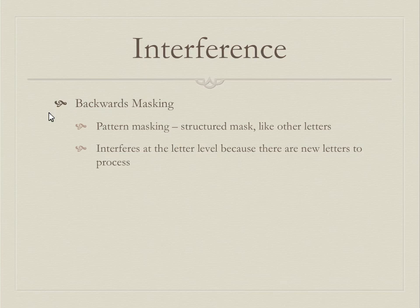Pattern masking uses structured masks — overlaying a target word with other similar symbols rather than random noise. Instead of interfering at the very early perceptual level, it interferes at the next level up: the letter level — the combination of features. When we get to the interactive activation model, this idea of perceptual levels, letters, and words will make a lot more sense.